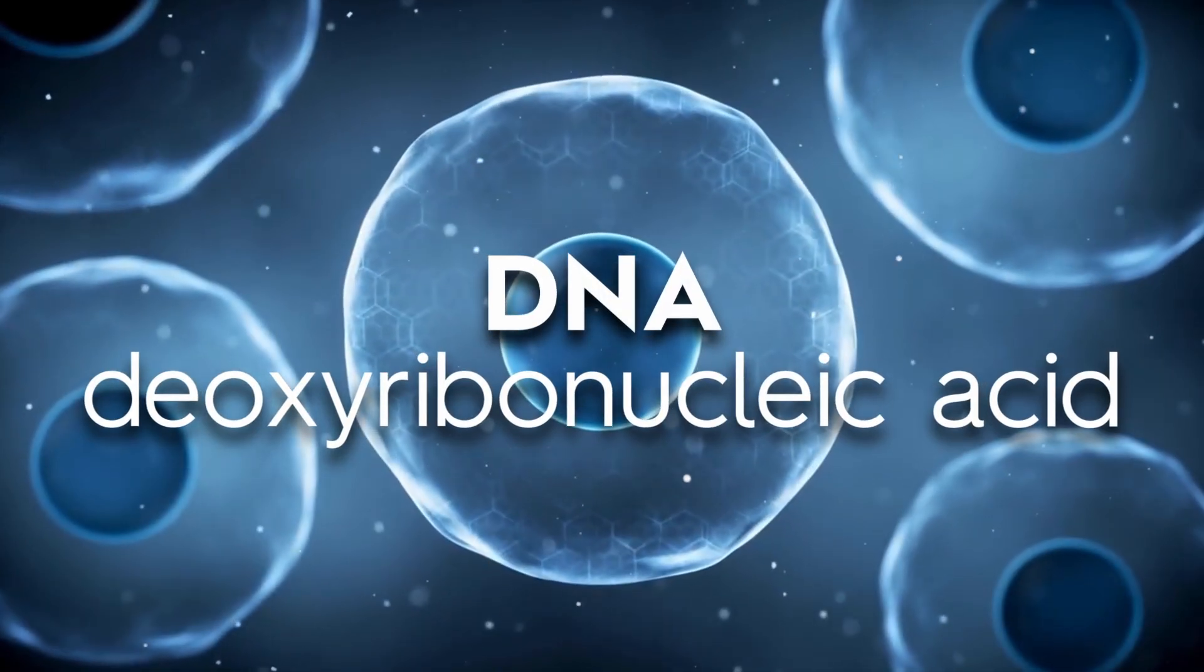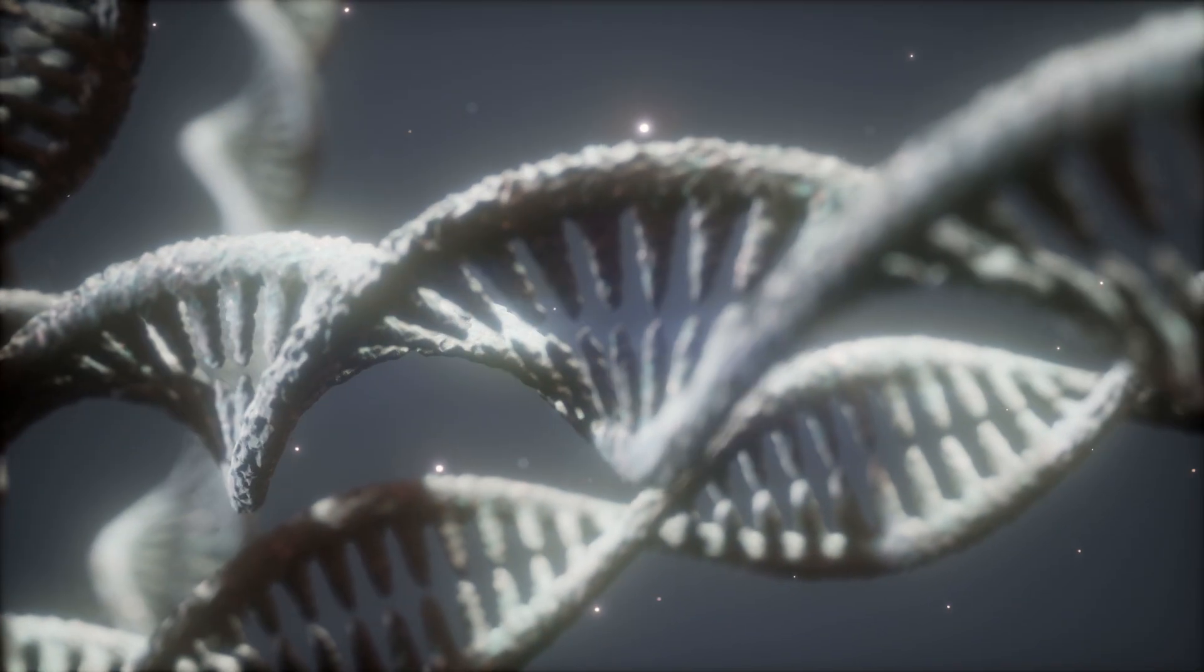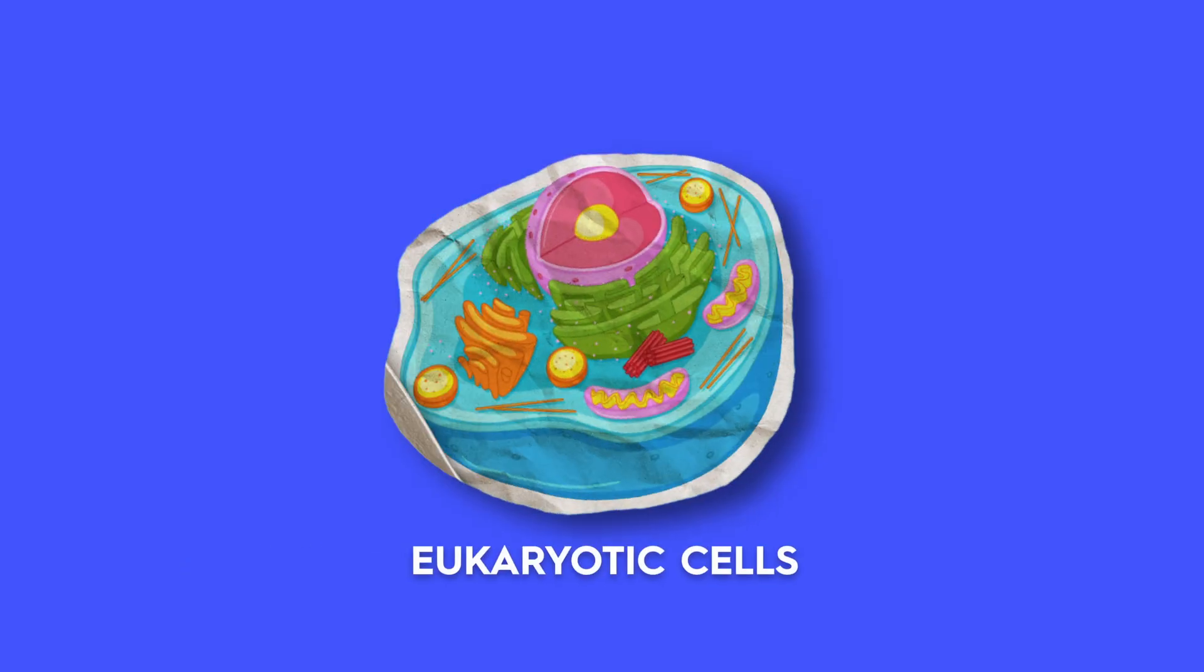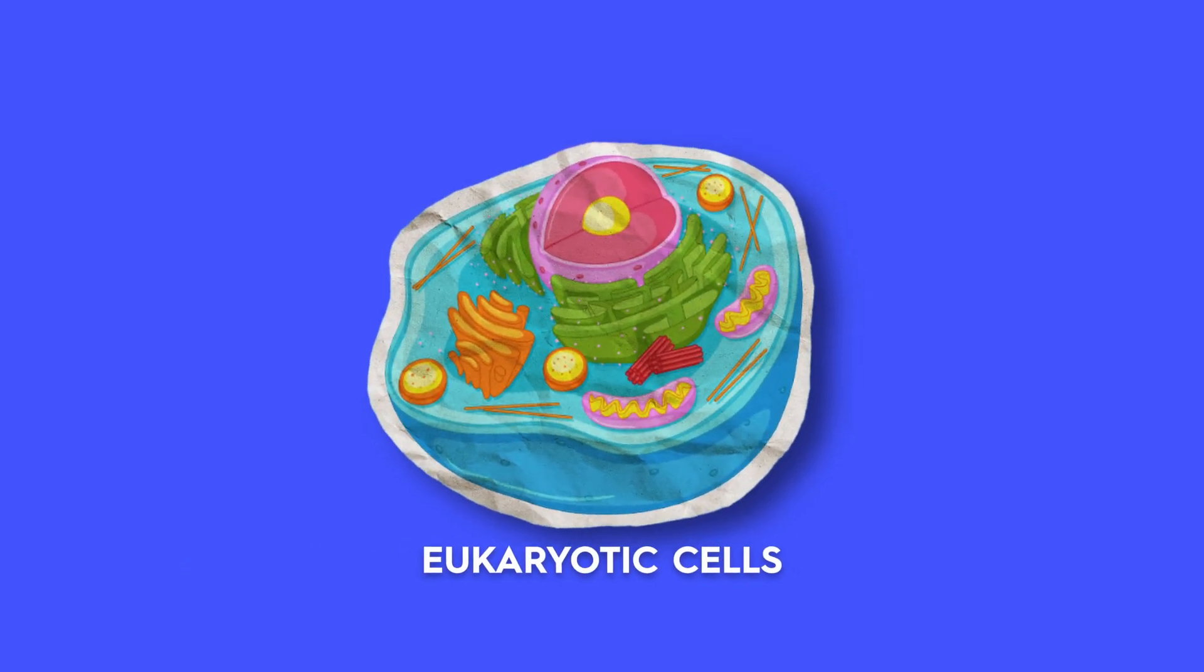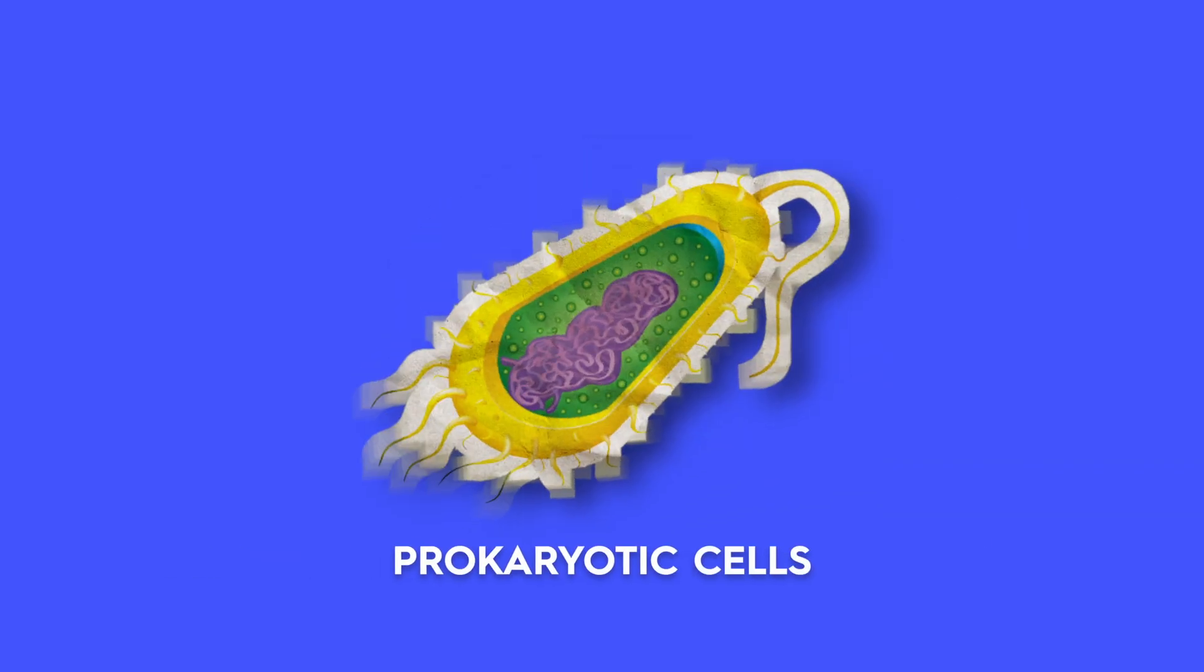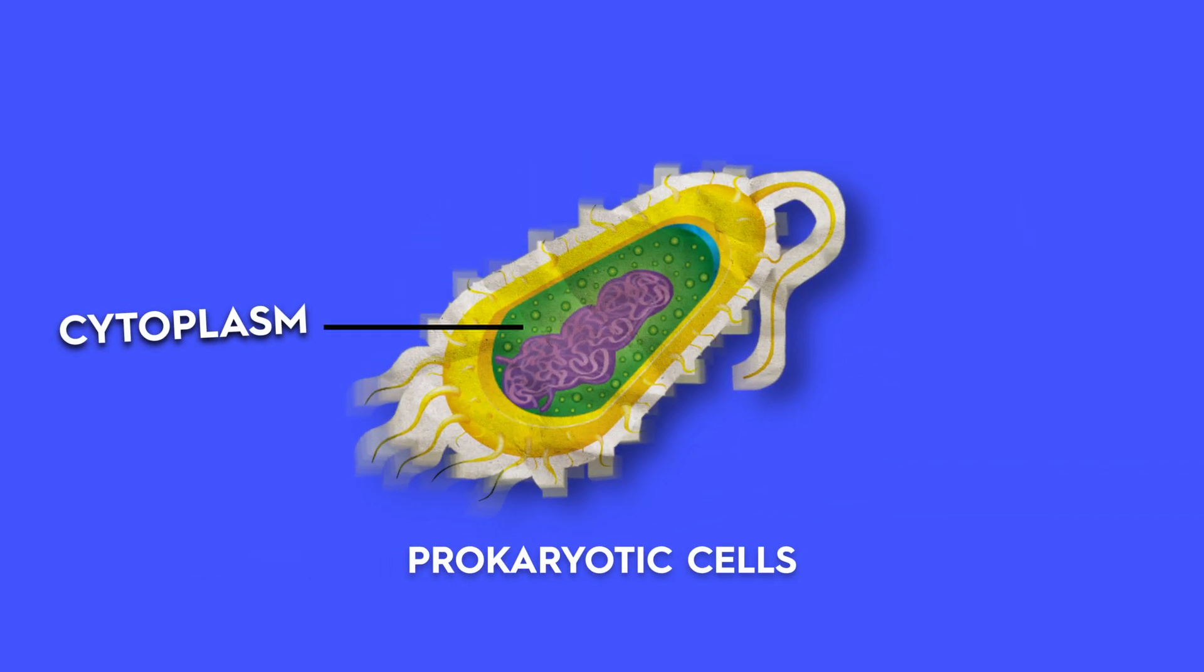DNA, or deoxyribonucleic acid, is shaped like a double helix, two strands twisted together. In eukaryotic cells, it stays in the nucleus, storing the complete genetic code. In prokaryotes, it floats freely in the cytoplasm.